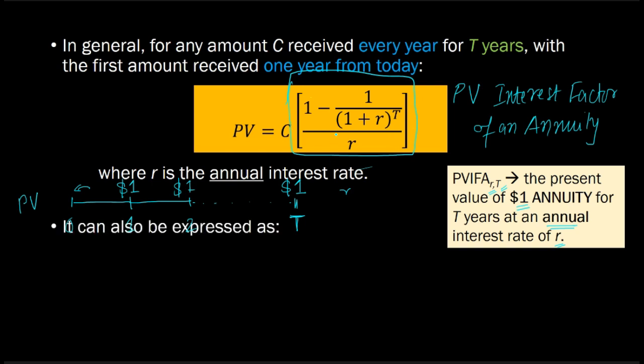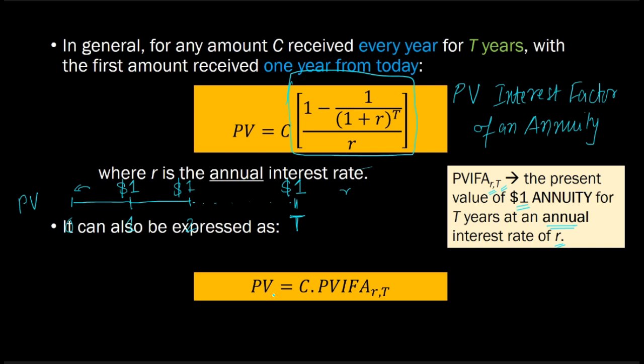And so the present value formula can also be expressed as C, where C could be any number like $400 or $500. This is the regular cash flow at these intervals. All you need to do to determine the present value of a $400 annuity is take $400 and multiply it by this PVIFA, which is the present value for a $1 annuity.